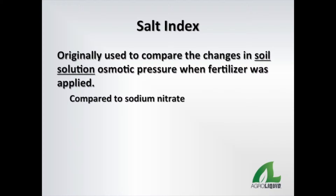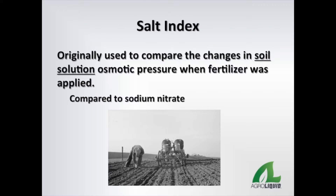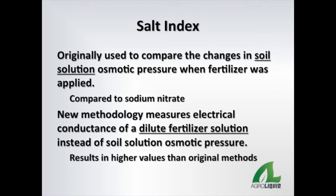Now that we have a definition of salt and how fertilizers fit into that definition, we can look at what we mean by salt index. The original intent of the salt index was to measure and compare the changes in soil solution osmotic pressure when fertilizer was applied to the soil. The standard for comparison was sodium nitrate, and that value was set at 100. Fertilizers that caused less of a change in osmotic pressure had a lower salt index, and those that caused more of a change had a higher salt index. This methodology was developed in the 1940s and was difficult to do. Newer methodology uses a measure of electrical conductance in the fertilizer solution, not the soil solution, to determine the salt index. This method usually results in higher actual values than the original methods and should not be directly compared to those original methods.